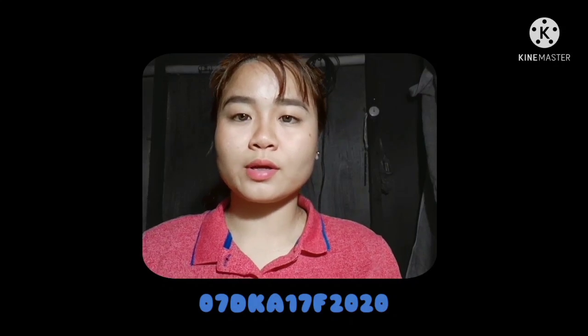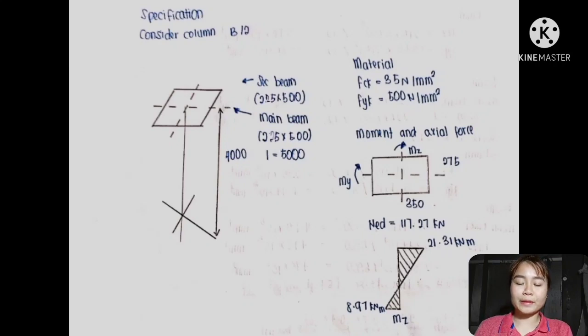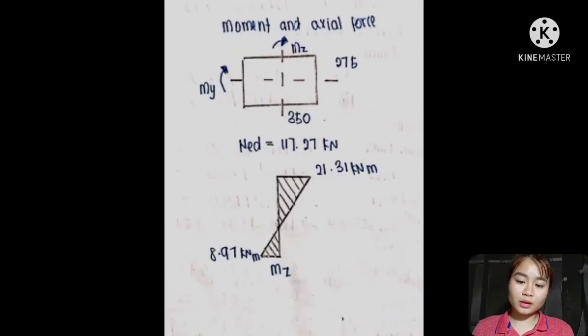Hello everyone. My name is Krishna Malabanyika and my matrix number is 07-DGE18F2020. I will explain the calculations for column design. As you can see, these are the specifications for our column: column length is 4,000 mm. Main beam is 225 × 500 mm with L = 5,000 mm, secondary beam is 225 × 500 mm. Materials: FCK = 35 N/mm², FYK = 500 N/mm².